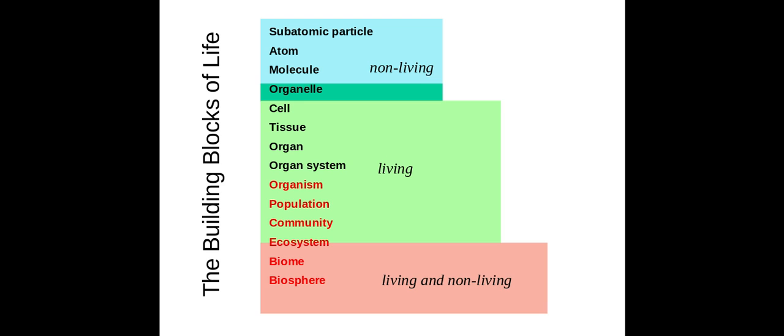A population is all the members of one species in an area. If you think of your town, for example, you could talk about the population of humans, or you could talk about the population of maple trees, or the population of squirrels. When you talk about population, you're only talking about one species in an area.